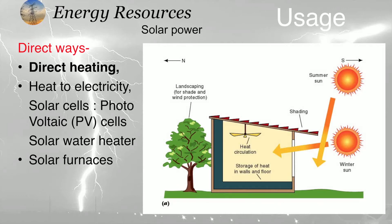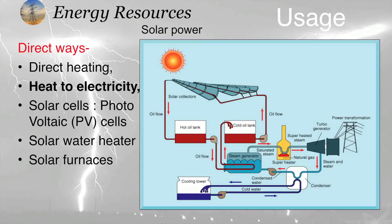Next is heat to electricity. We generally get two types of energy from the sun: heat and light. To convert heat into electricity, we use solar reflectors that reflect radiation to the center of a tube where oil is passing. This oil gets heated, passes through a heat exchanger, converts water into steam, and the steam rotates a turbine to produce electricity.